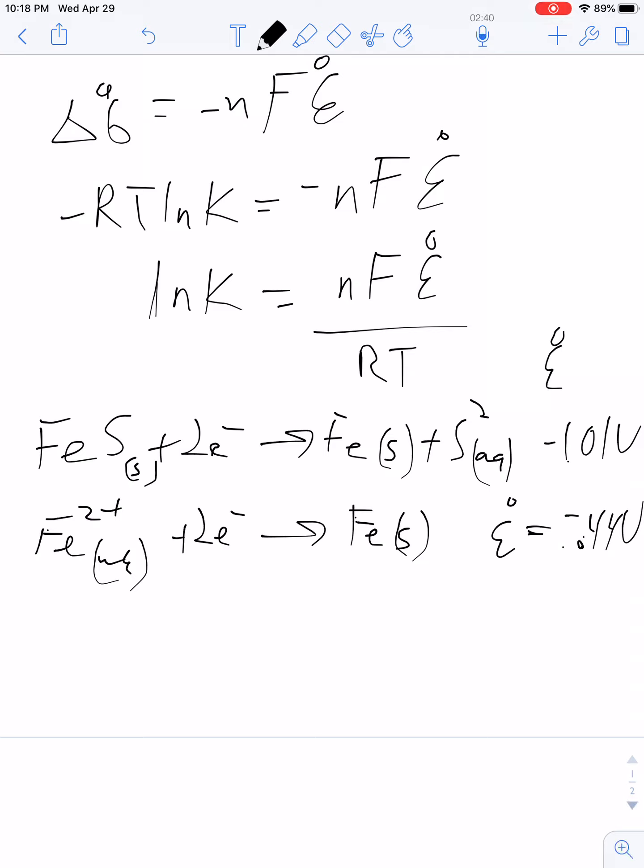And the question is now, which one do we flip? Well, it's a Ksp. So if you remember, the Ksp is when we're forming the iron sulfide from the ions. So that means if we're forming the iron sulfide, it's going to have to be on the right side of the arrow. Therefore, we have to flip the top one.